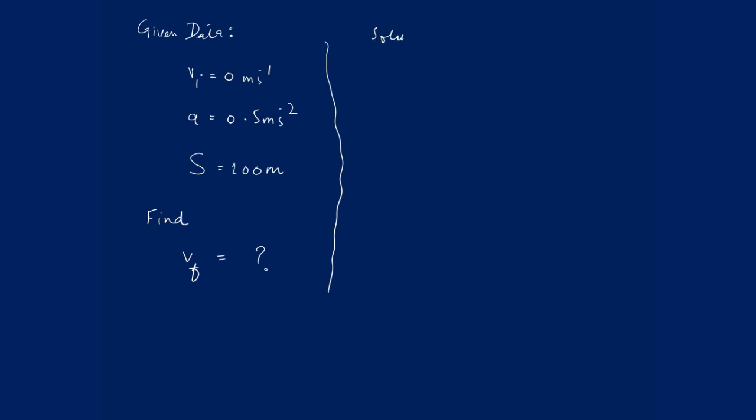The solution of this problem is very simple. We can use third equation of motion because we have acceleration, distance, initial velocity and the final velocity. So 2As is equal to VF square minus VI square.